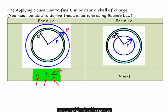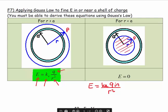For the second part, where the point of interest is inside the shell of charge, we get the answer 0. At first glance that's probably shocking, but let's think about it. We get E is equal to KeQ_inside over R squared, just like before. But ask yourself: what is the charge inside? There's no charge inside this Gaussian surface, because all the charge resides in the shell. So there's no electric field — 0 newtons per coulomb.